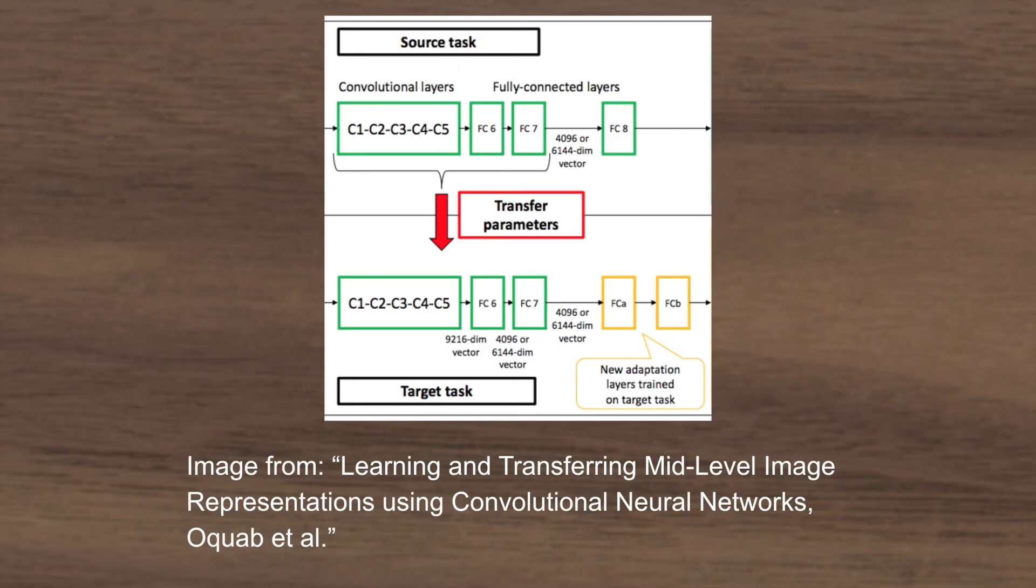This is just a picture showing how transfer learning is used in classification tasks. This is a really popular paper where they repurpose classification layers for the task of object localization.